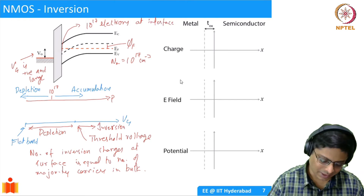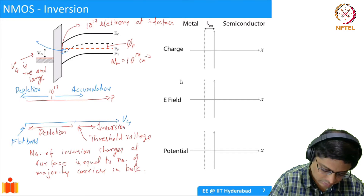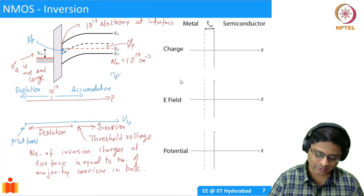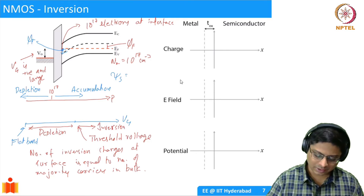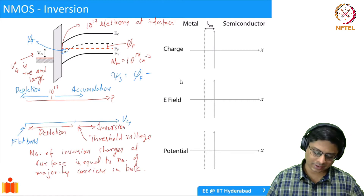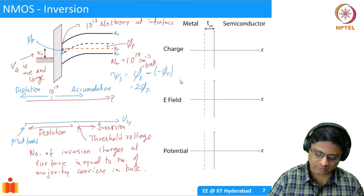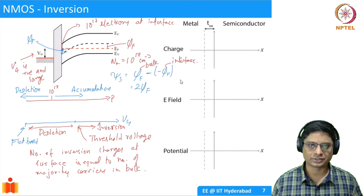I have carefully drawn this such that this distance is phi_f and this distance is also phi_f. So the surface potential phi_s equals: taking EF as reference, in the bulk it is phi_f, and at the surface it is minus of minus phi_f, giving us 2*phi_f. So whenever the surface potential reaches 2*phi_f, we say that there is inversion.